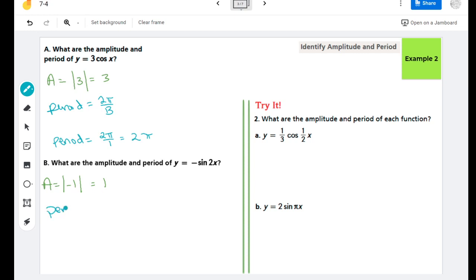In terms of our period, we do 2π divided by our B value, which is the number in front of x, so 2π divided by 2. So the period of this function is π. So let's go ahead and let's try graphing this so that you just understand what these have done to impact our graph.